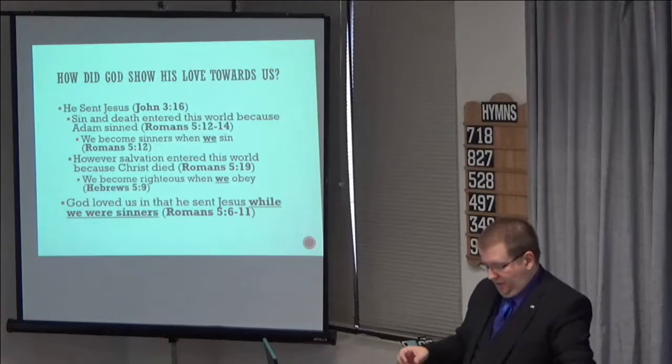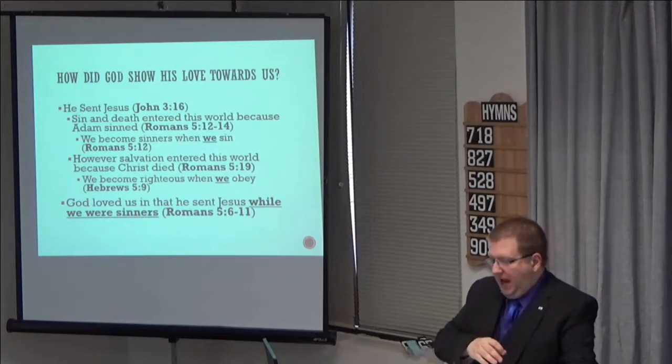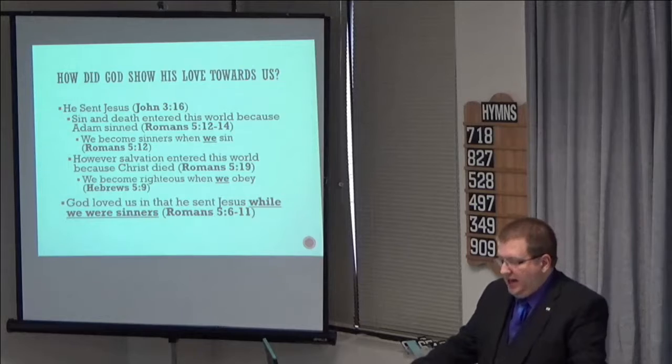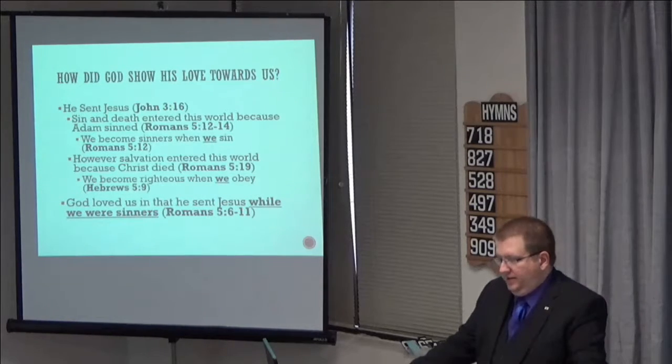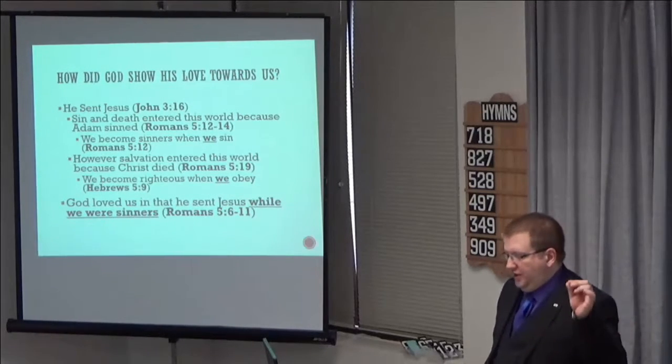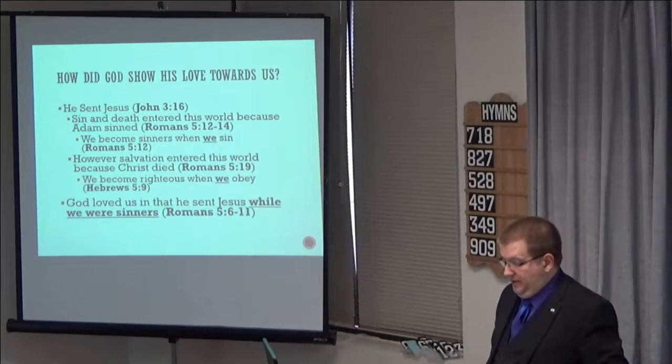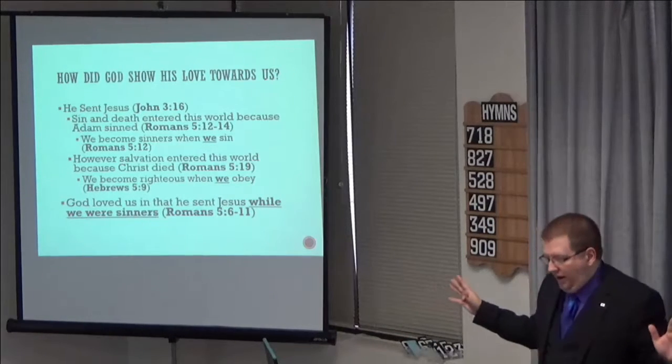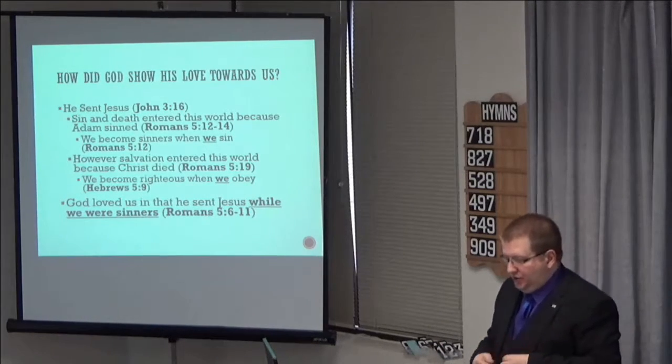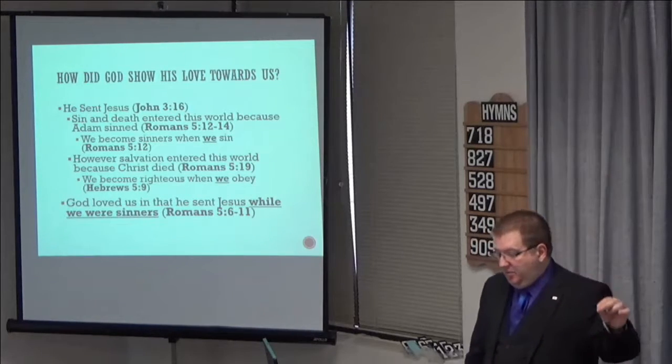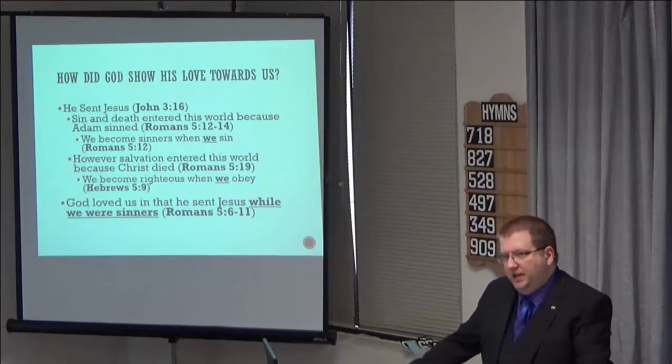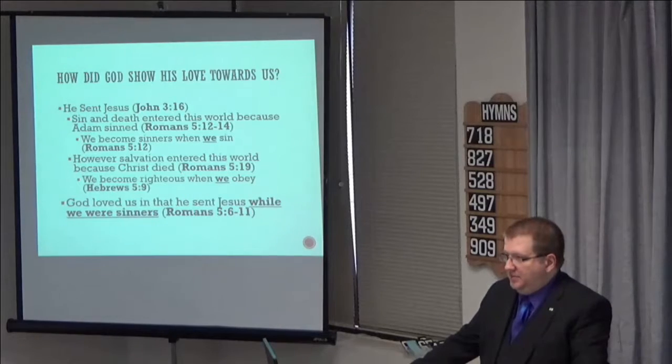This plan was made before mankind ever sinned. What was first prophesied to us after the fall? In Genesis 3:15 we read, I will put enmity between you and the woman and between your offspring and her offspring. He shall bruise your head and you shall bruise his heel. This is God telling Eve that through her seed, God would send the Savior to crush the head of the serpent, which is the devil. This seed could have been anyone, but ultimately we know it was narrowed down to Abraham. In Genesis 12:3 we read, I will bless those who bless you, and him who dishonors you I will curse, and in you all the families of the earth shall be blessed.